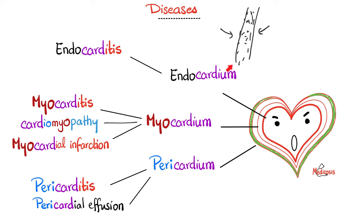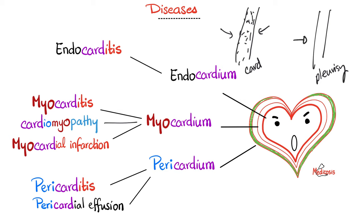When this inflamed inner layer rubs against the outer layer, they will make a scratchy noise — and this is called the pericardial friction rub. To demonstrate how it sounds, get an old pair of shoes and rub the two soles together. Now, how can we differentiate between the friction rub caused by the pericardium and the friction rub caused by pleurisy? Ask your patient to take a deep breath and hold it. When the patient holds their breath, the pleural friction rub will disappear, but my heart is still beating, so the pericardial friction rub will not disappear.